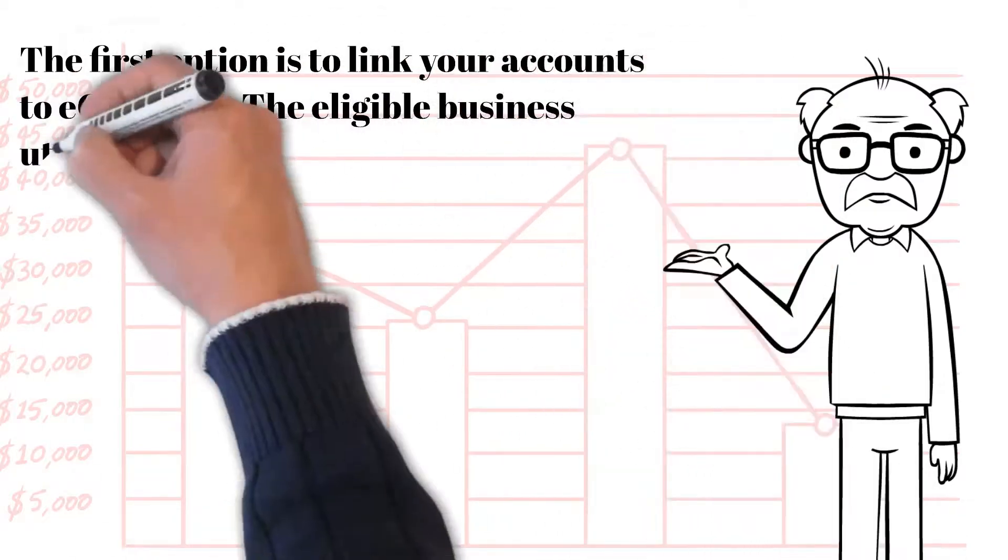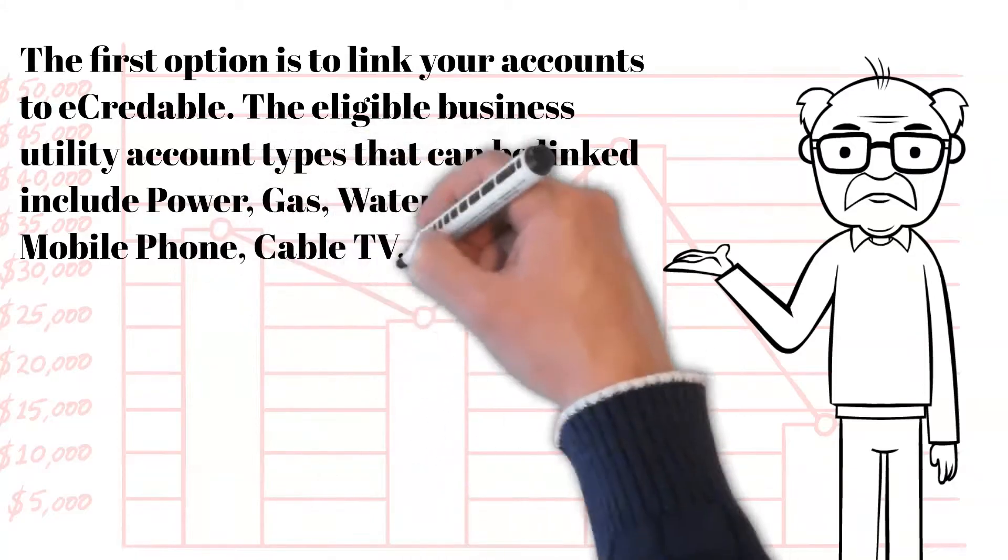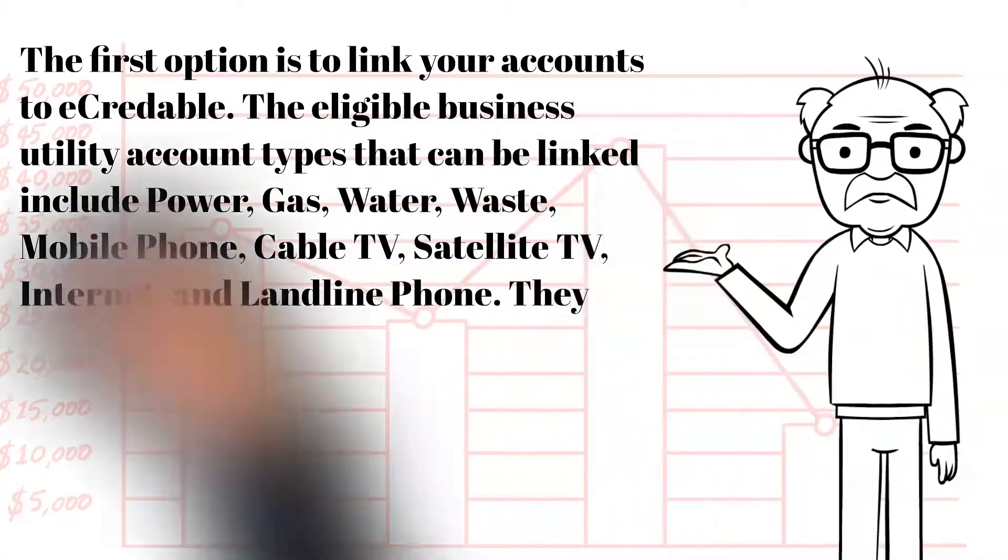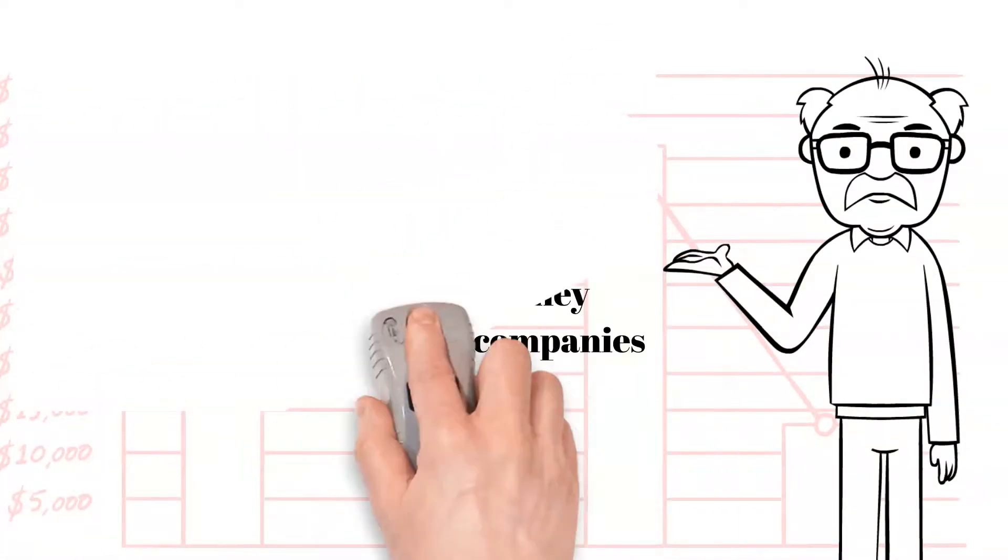The eligible business utility account types that can be linked include power, gas, water, waste, mobile phone, cable TV, satellite TV, internet, and landlines. They connect over 2,000 utility companies across the United States.